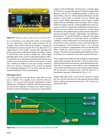Lowering the nose and gaining airspeed in the descent may confuse you into perceiving a false vertical goal or vertical rate, resulting in failure to meet the crossing restriction with some systems. Determine if the system recomputes the airspeed/ground speed, or if you must enter the descent airspeed during the VNAV programming.